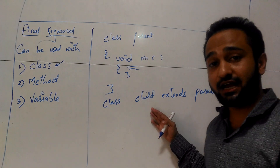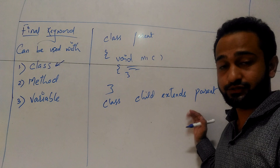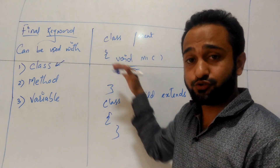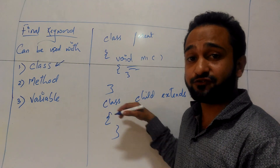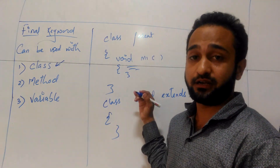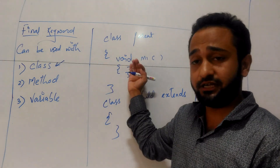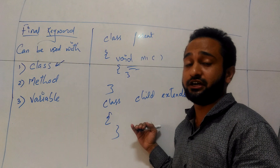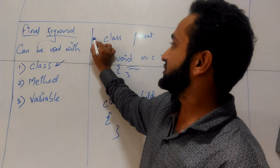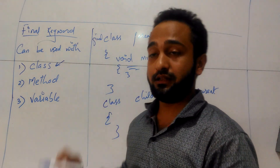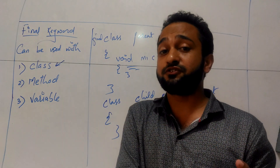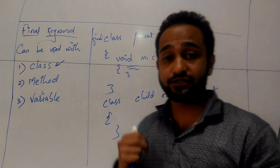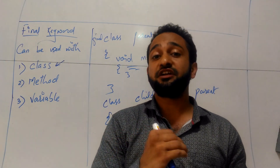My child class is extending the parent class. In general, if I don't have the parent class as final, the child class will inherit all the properties of the parent class — all members except private data, so void m1 being default will get inherited. But if I make the parent class as final, I will get an error that the parent class is final and cannot be inherited.